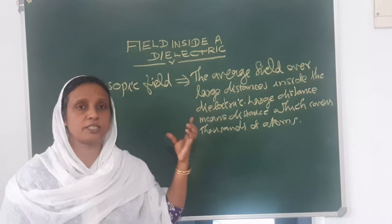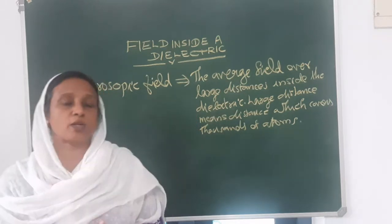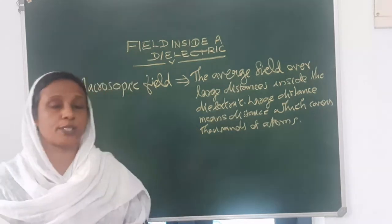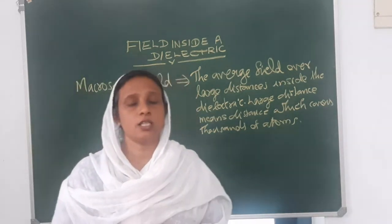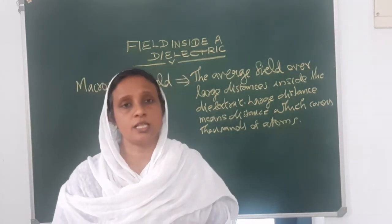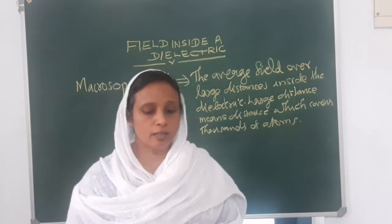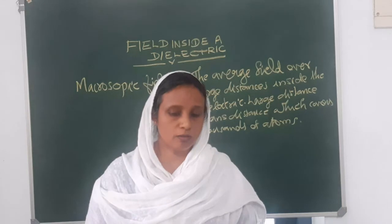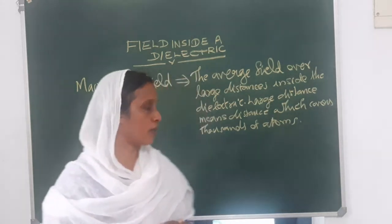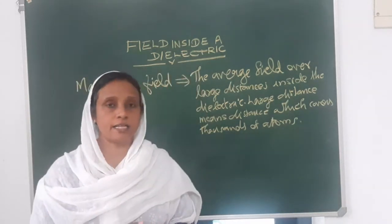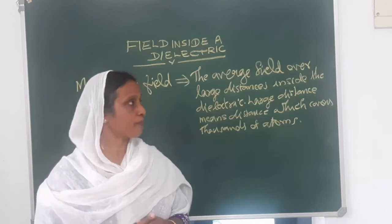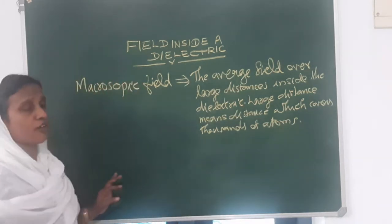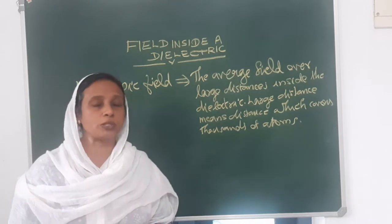We are interested in this macroscopic field, not in the microscopic field. In the case of the average field or the macroscopic field, we can assume the dipole moment — this polarization — is almost smooth over the inside of the dielectric. Now, how can we find out this macroscopic field? That is the next question.